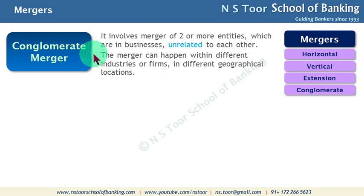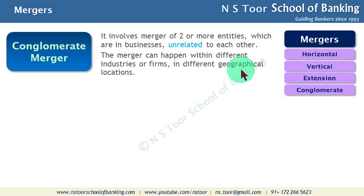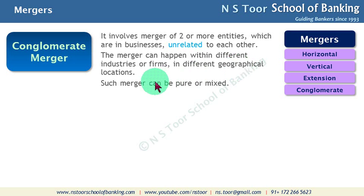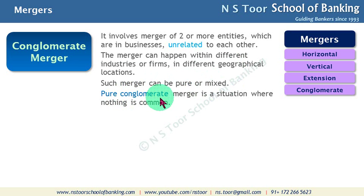This type of merger can happen within different industries or between firms in different geographical locations. It is not compulsory that they share the same geographical location. This merger can be a pure conglomerate merger or a mixed conglomerate merger. In a pure conglomerate merger, there is nothing in common between the two entities.